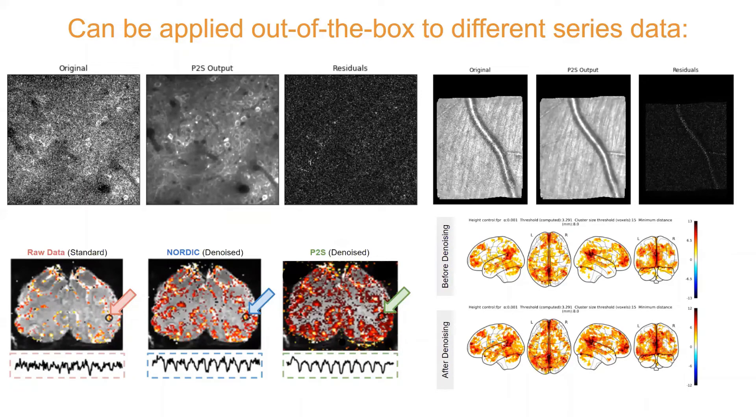Patch2Self can be applied pretty much on any data. It's a generic denoiser. It is not restricted to diffusion MRI. As long as you have a series of data, you can use Patch2Self on it. So the one that you see on top is optical imaging data. You can see that pretty much a lot of noise is suppressed. Here is the optic nerve, which is through a novel instrumentation that we have at IU. And the one on bottom is functional MRI. And you can see that it is also clearing up quite a bit of the time series.